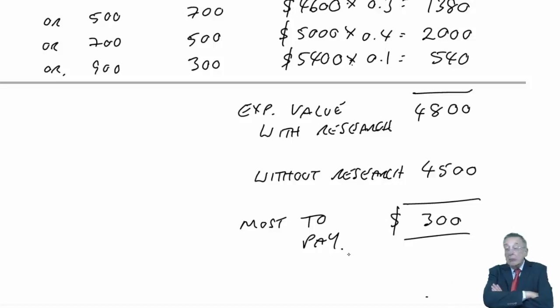So if I do buy this research, I'll end up with one of those four profits with those probabilities. What's the expected return if we buy the research? As always multiply and add. 880, 1380, 2000, 540. The expected value with the research is 4,800. So if we buy the research, I've an expected return of 4,800. If we didn't buy the research, in part B, when we didn't have the research and we used expected values, we chose to contract size 700. The expected return was 4,500. And therefore, what's the most I'm prepared to pay for the research? I'm prepared to pay up to the difference of 300.